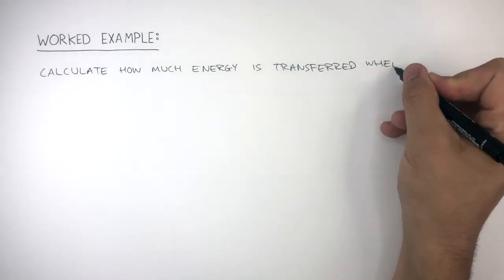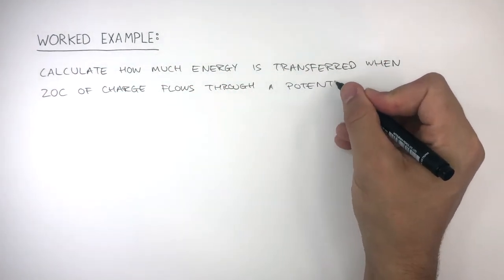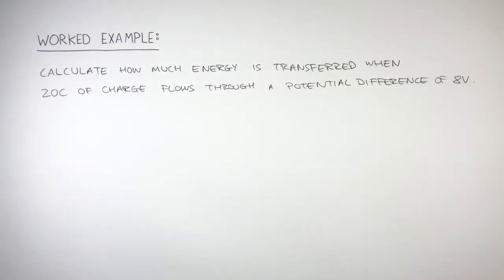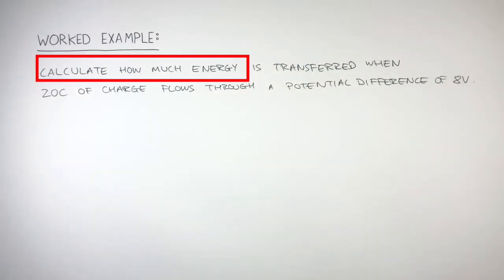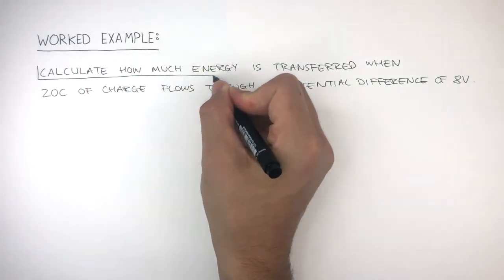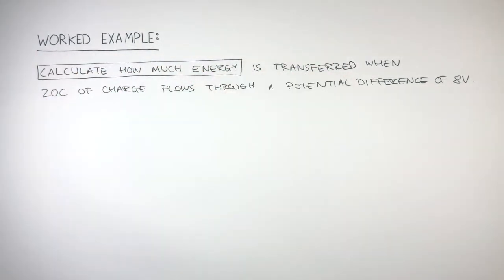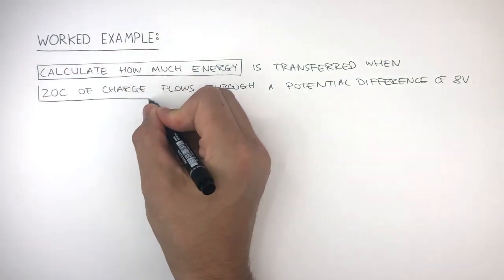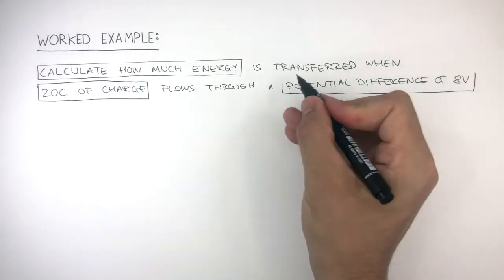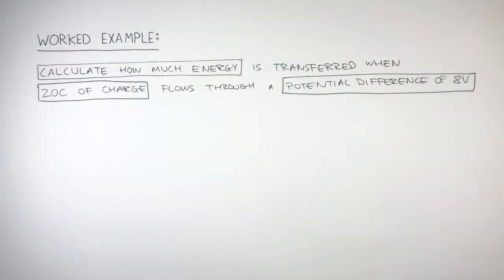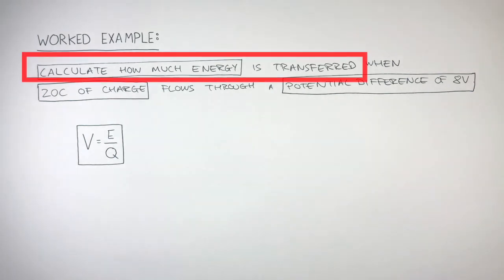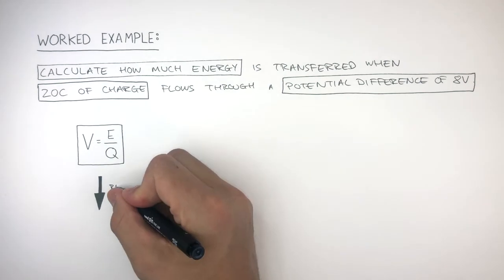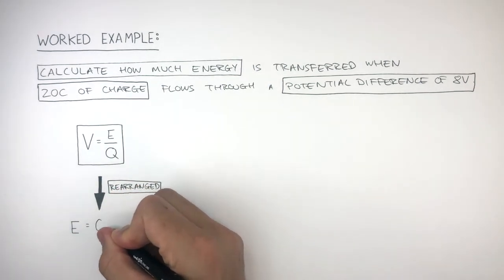Another worked example: calculate how much energy is transferred when 20 coulombs of charge flows through a potential difference of 8 volts. The question is asking us to calculate how much energy is transferred, so we put a square box around this. The information given is 20 coulombs of charge flowing and a potential difference of 8 volts. The equation V equals E over Q is rearranged to E equals Q times V.